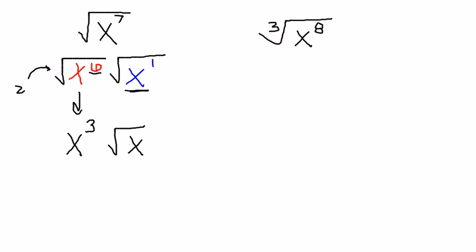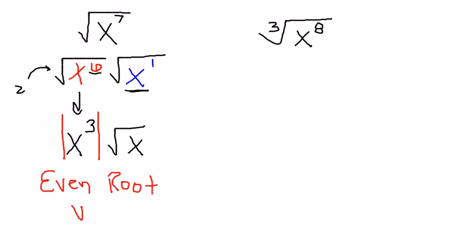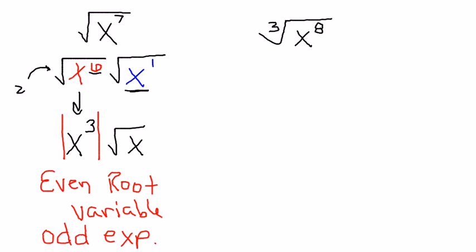Now, there's another little rule that says I need an absolute value sign around this x. Not to go into too much detail, but the bottom line is: if you ever have an even root — which we did, we have a square root — of a variable, and the variable comes outside the radical with an odd exponent, then it needs to have an absolute value sign around it. So maybe you can just remember a little acronym: EVO — E-V-O. Any time you're taking a radical of a variable, ask yourself: was this an even root of a variable, and did it come out with an odd power? If it did, put an absolute value sign around it.